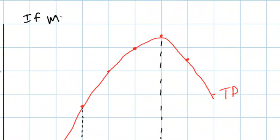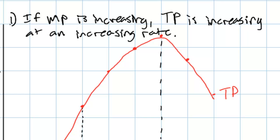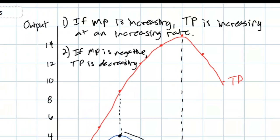First: if marginal product is increasing, total product is increasing at an increasing rate. Second: if marginal product is negative, total product is decreasing. This is explained by the fact that marginal product is the change in total product — if an additional worker's marginal product is negative, this means that the total output of our factory has actually fallen.